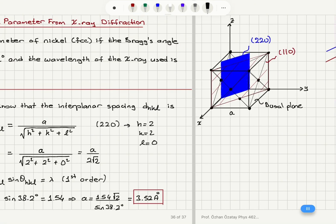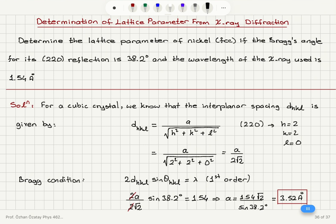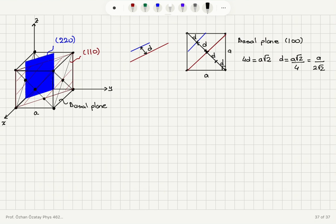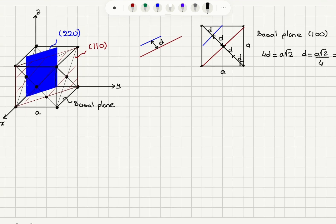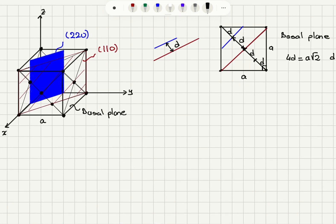So, this is exactly the result I have found using this formula, a divided by square root h square plus k square plus l square. The interplanar spacing between two adjacent 220 planes is d. In this plot here, the 220 plane and 110 plane are the nearest planes that are parallel. And you can see that the interplanar spacing is one-fourth of the face diagonal of this cube.